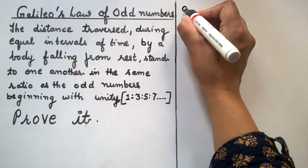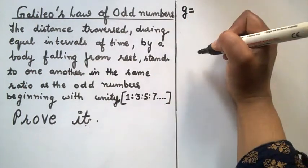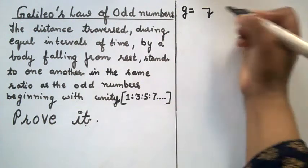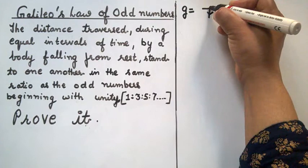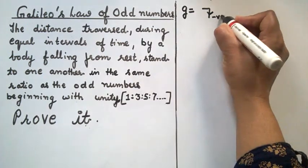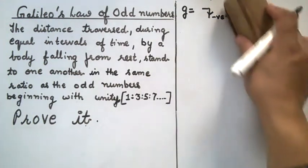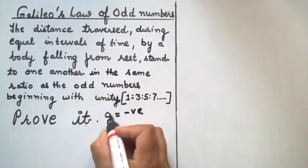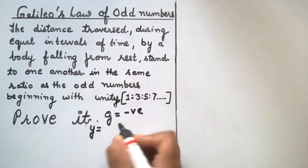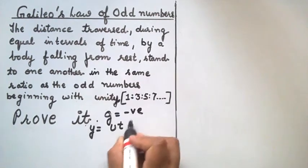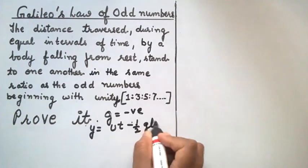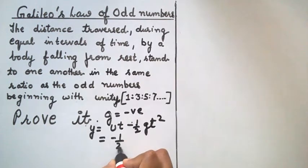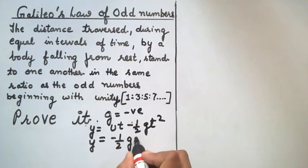We know that acceleration due to gravity always acts in the downward direction. So here, if the body is at some height and it falls towards the earth, gravity is acting in this direction. We are taking g as negative in this direction. Thus, in free fall, we take g as negative and the distance covered is given by y = ut minus half g t squared. When the body is at rest, u is 0, so we can write the position as y = minus half g t squared.